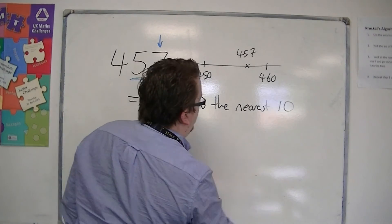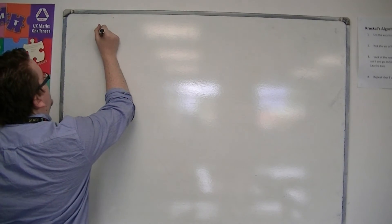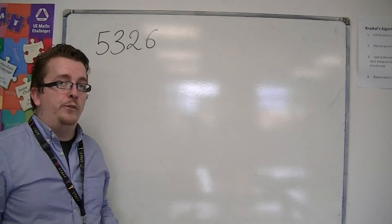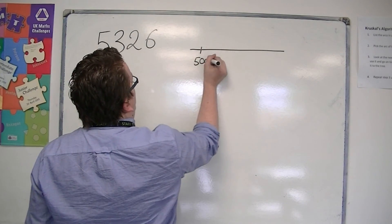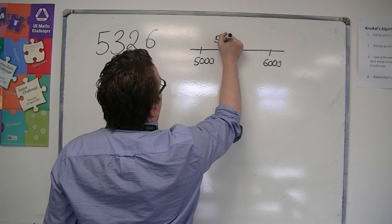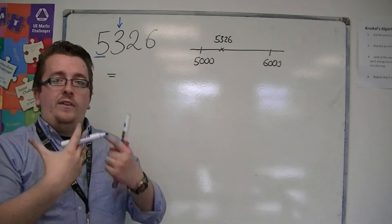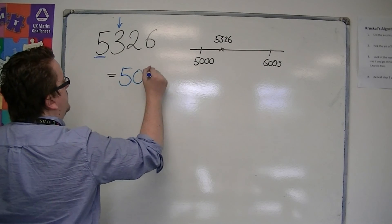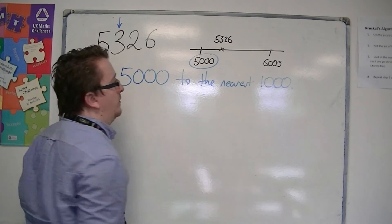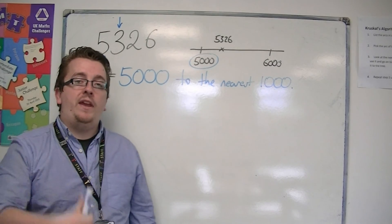The answer changes depending on how accurate we are looking at these numbers. So to the nearest thousand, if I had a number like five thousand three hundred and twenty-six and I was asked to round that to the nearest thousand, on my number line I've now divided it up into thousands. I look at the thousands column, one to the right — it is less than five, so I round it down to five thousand.